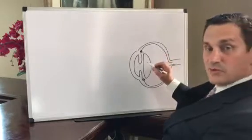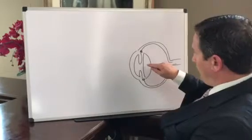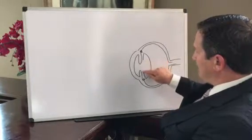When this intraocular lens becomes opacified, it's called a primary cataract. Cataract surgery is performed making a hole in the anterior capsule.